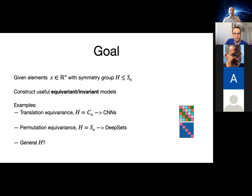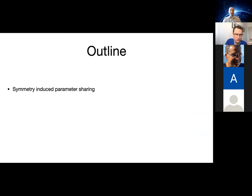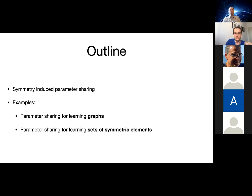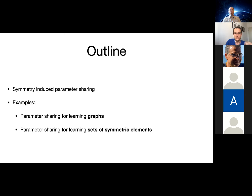The big question is: what should we do if we have some general permutation group H — not something like the whole symmetric group or cyclic translations, which we know how to solve? The outline is as follows: I'm going to discuss a notion I call symmetry-induced parameter sharing, then show two examples of using this approach for designing equivariant neural networks — first, how to use it for learning on graphs, and second, how to use it for learning sets of complex or symmetric elements.